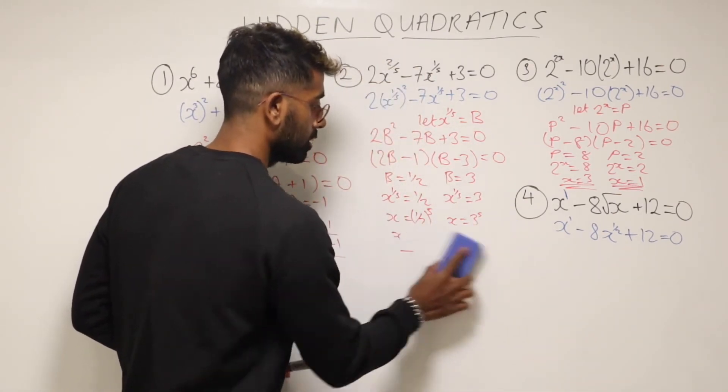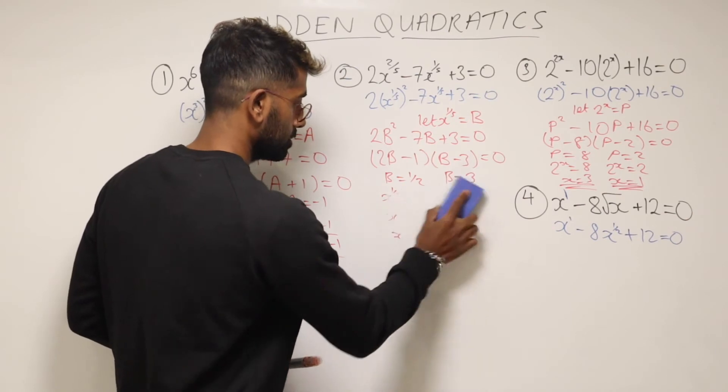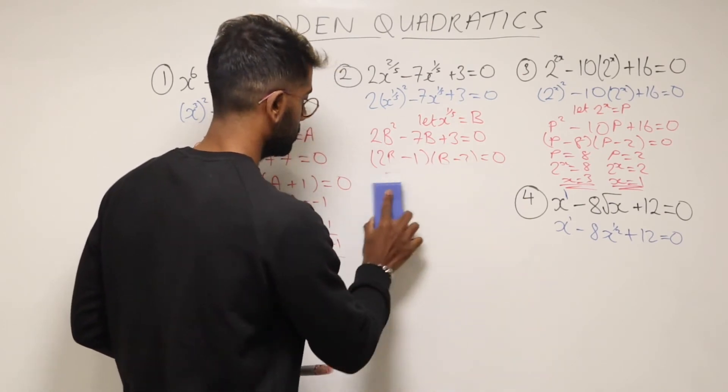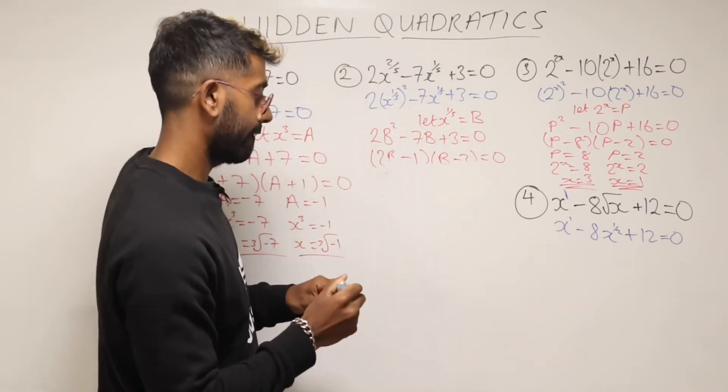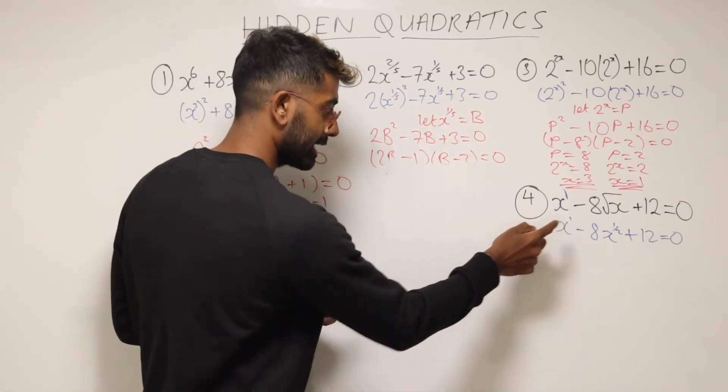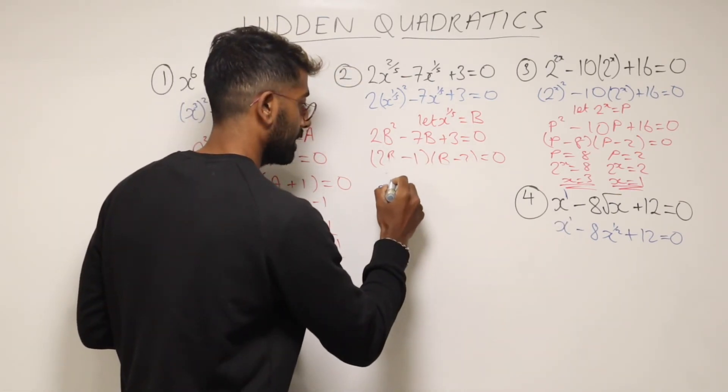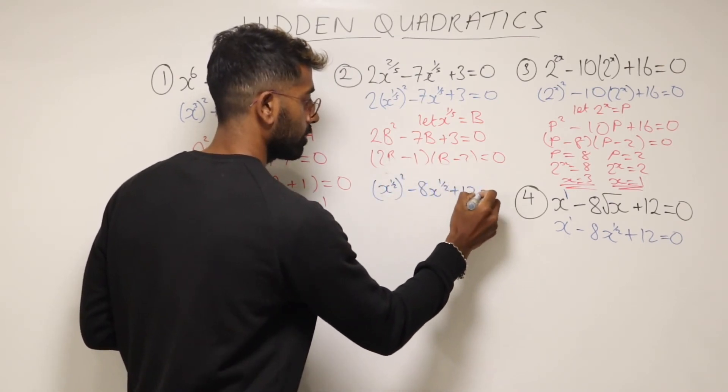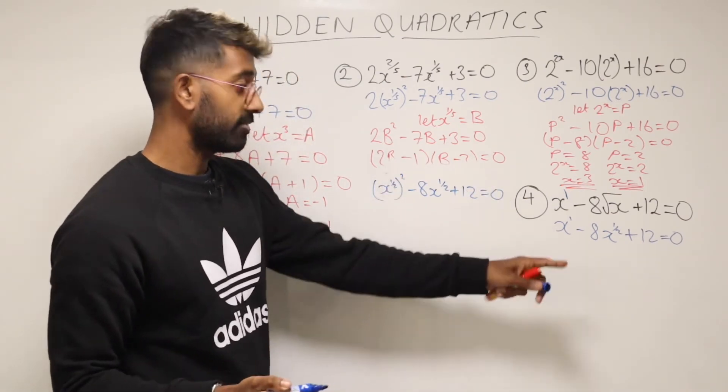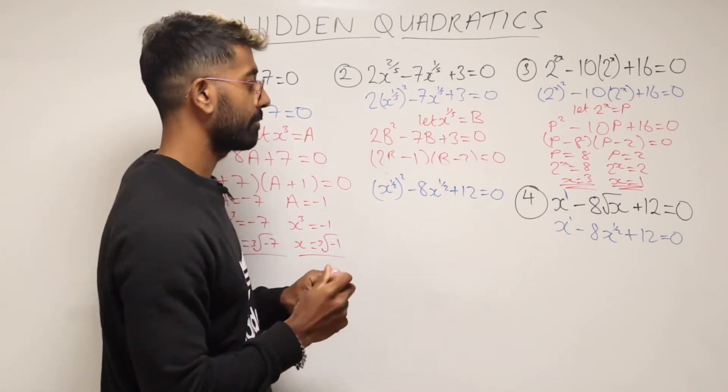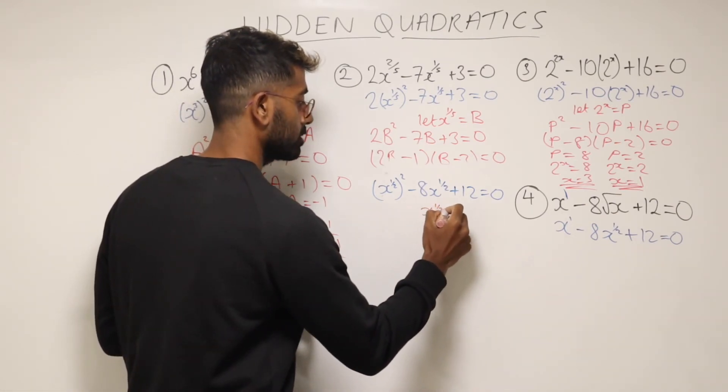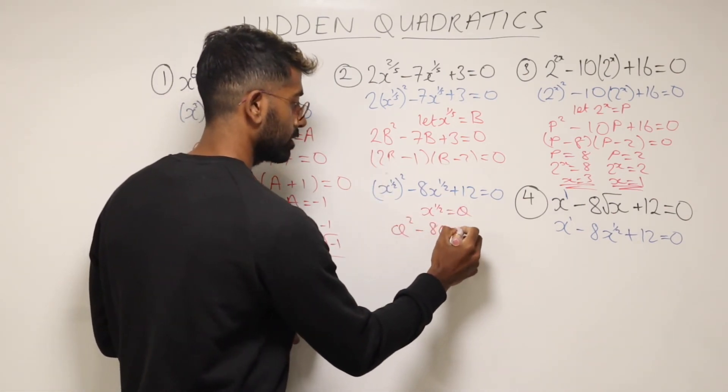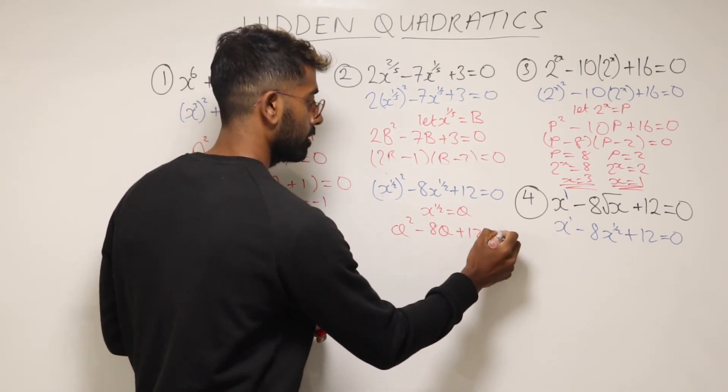Maybe I'll rub this out and we can use a bit of space here to solve that. So I'll just get rid of this. Okay, perfect. So with that one then, we'll need to begin by rewriting this x to the power of 1. We can write it as x to the power of a half squared and then minus 8x to the half plus 12 equals 0. And that's because 2 times a half is going to give me 1. Then we can pick a random letter again. And we'll say let x to the half equal, we'll go with Q this time. So we can go Q squared minus 8Q plus 12 equals 0.